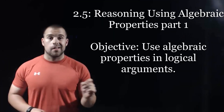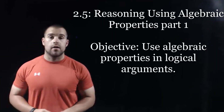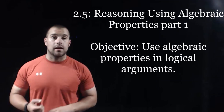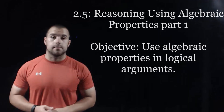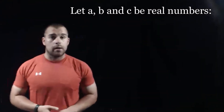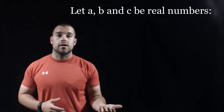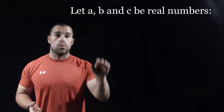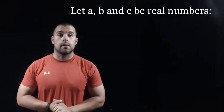Hey guys, Mr. Backberg here. This is part one of lesson 2.5. We've got one objective for this video: we're going to be using algebraic properties in logical arguments. There are five different algebraic properties that we're going to be working with, and in order for these properties to work, we're going to need a few real numbers. So we're going to let A, B, and C represent some real numbers.